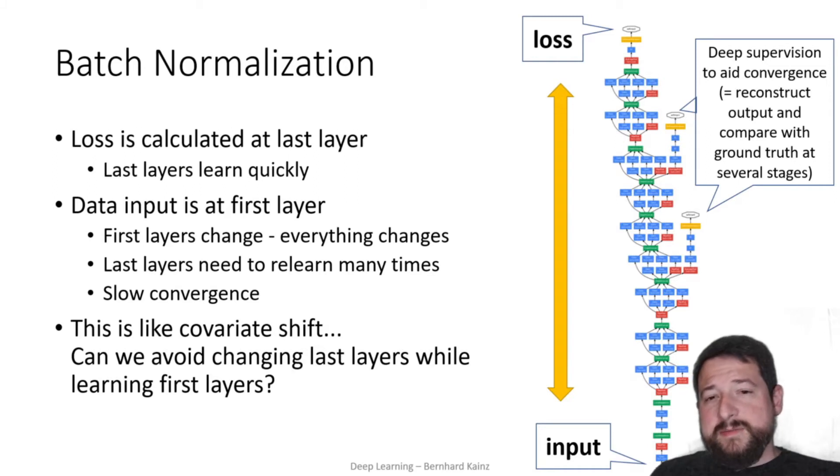So now, as we saw in the last video, the problem with very deep networks is that they often have a difficult time to converge. Some tricks like deep supervision help where you can reconstruct a partial output at intermediate stages and back propagate the loss also from there.